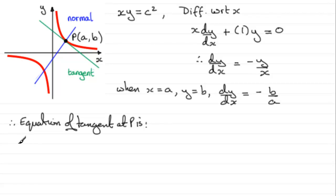So if that's the case, we would therefore have Y minus B equals M, the gradient, which is minus B over A, multiplied by X minus A.